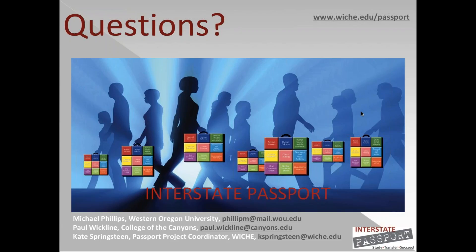To clarify: when Michael mentioned 180 credits at Western Oregon, those are quarter credits. We are on the quarter system, where courses run 10 weeks. So in a semester system, that would be fewer classes covering about the same amount of content. At Western Oregon University, which is based on the quarter system, it is 180 credits to graduate.